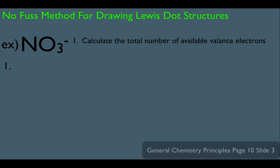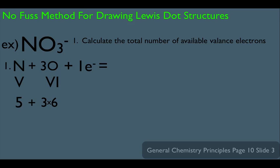In our molecule, we have nitrogen and three oxygens. The nitrogen and the oxygens have a certain number of valence electrons, which we can look up on the periodic table. Since this molecule has an overall negative charge, it has one extra electron, so we add that to our total count. Nitrogen is in column five, so it has five valence electrons. Oxygen is in column six, so it has six valence electrons. Since we have three oxygens, we write it as three times six. Plus the extra electron, the total number of available electrons is 24.